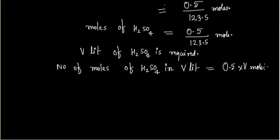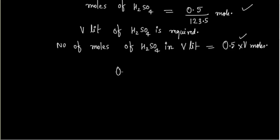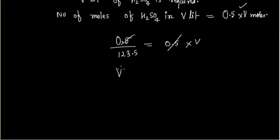We can equate these moles. So 0.5 divided by 123.5 equals 0.5 times V. Therefore, V equals 1 divided by 123.5 liters.